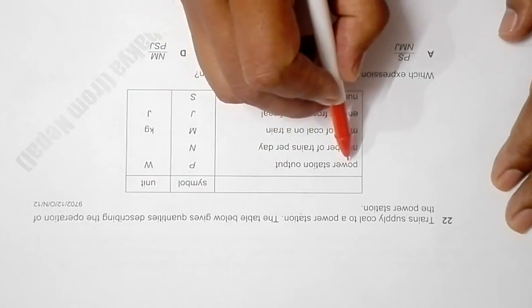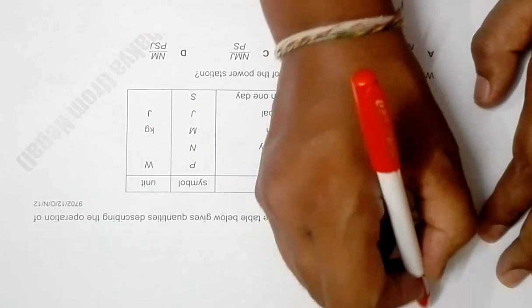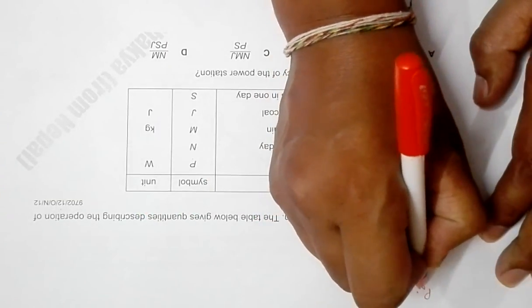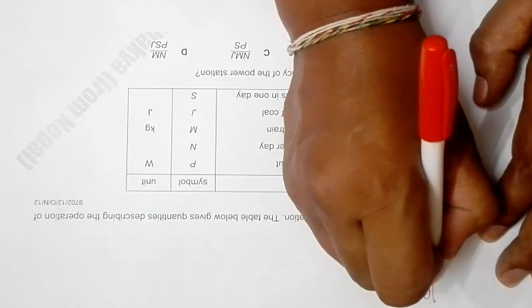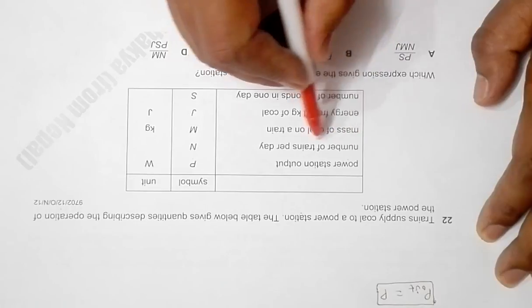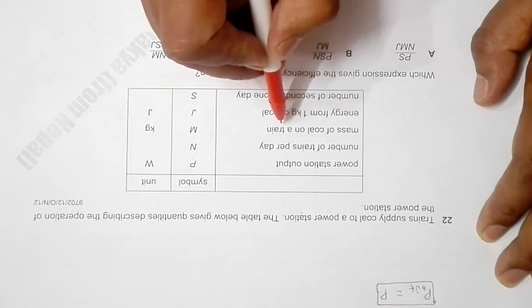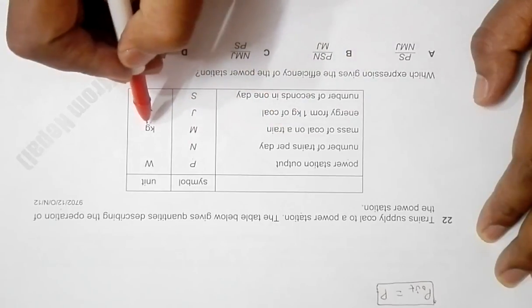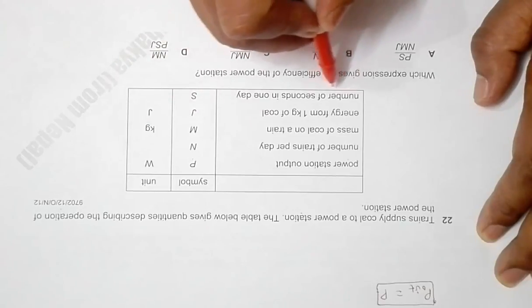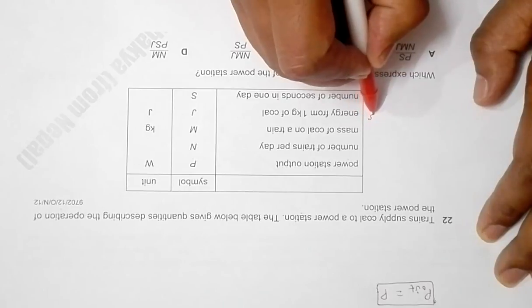The power station output equals P, so the first thing we have is power output equal to P. This stands as a major quantity. Then we have number of trains in one day equal to n, mass of coal on one train equal to m in kg, energy from one kg of coal equal to J, and number of seconds in one day equal to s. So first let's consider...